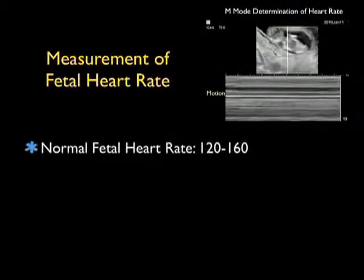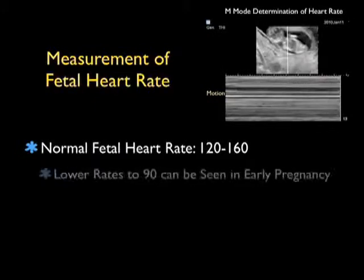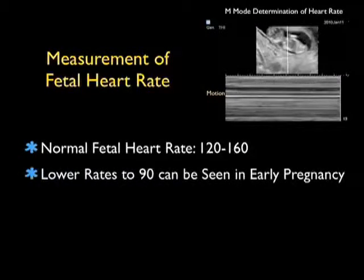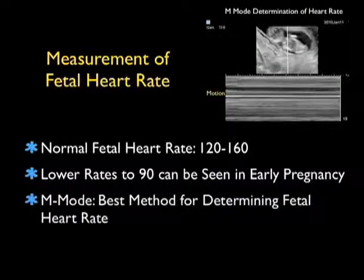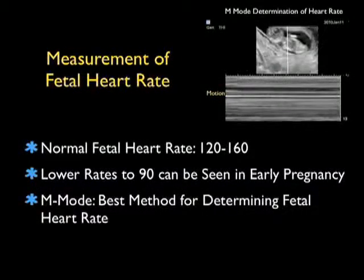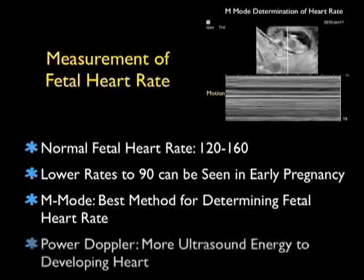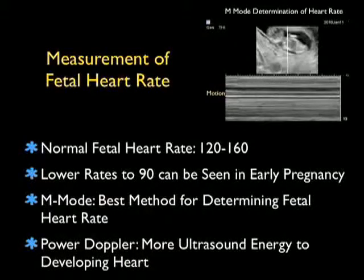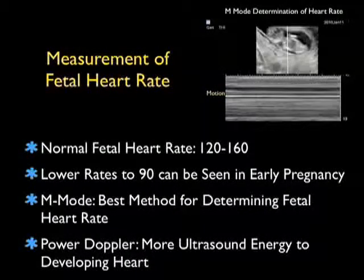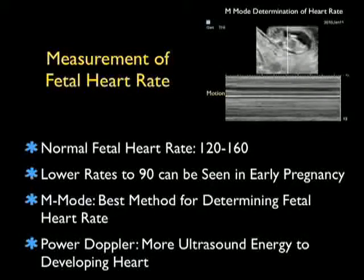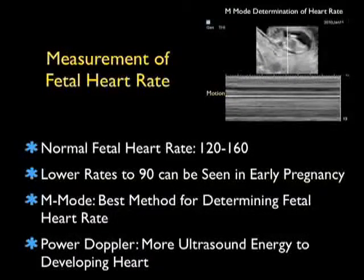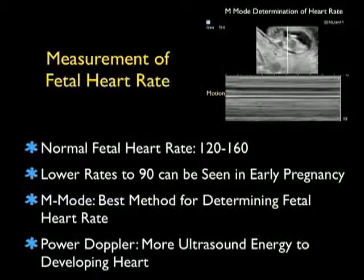In addition to measuring the gestational age, another very important concept is to get a measurement of the fetal heart rate. Normal fetal heart rates will range from 120 to 160 beats per minute, but lower rates down to 90 beats per minute can be seen in early pregnancy in the early parts of the first trimester. M-mode is the best method for determining fetal heart rate. Power Doppler, in contrast, gives more ultrasonic energy to the developing heart. Thus, M-mode is the preferred way of measuring the fetal heart rate.